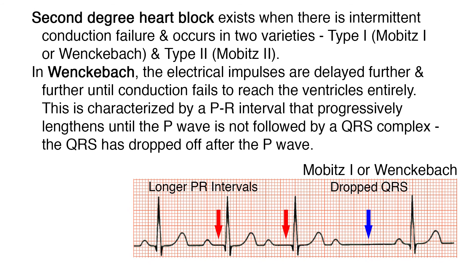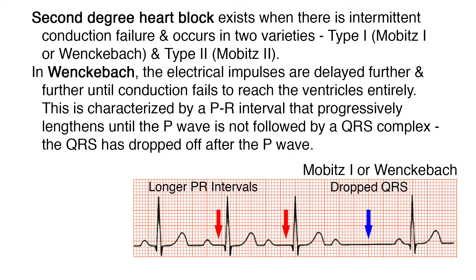Second degree heart block exists when there is intermittent conduction failure and occurs in two varieties: Type 1, also called Mobitz 1 or Wenckebach, and Type 2, or Mobitz 2. In Wenckebach, the electrical impulses are delayed further and further until conduction fails to reach the ventricles entirely. This is characterized by a PR interval that progressively lengthens until the P wave is not followed by a QRS complex — the QRS has dropped off after the P wave.